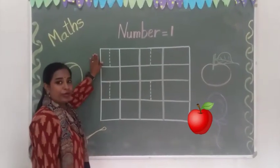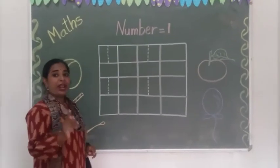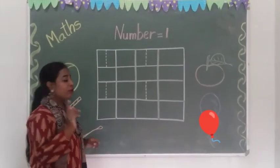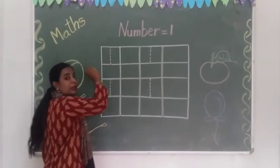Now let me show you with the notebook. If you have a grid page, whenever you write number 1, you have to keep in mind that you start from the top till the bottom.